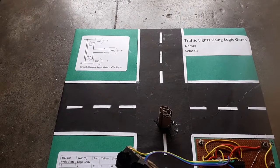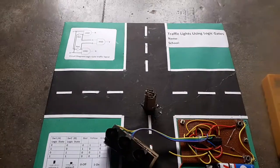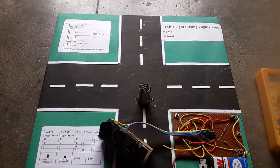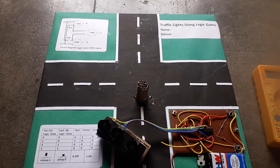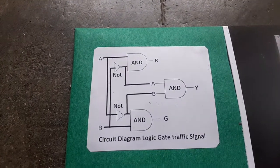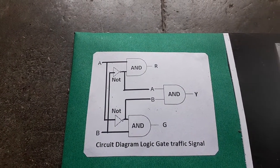The project name is traffic lights using logic gates. In this project we have constructed a traffic light using logic gates like AND gate and NOT gate. We have used three AND gates and two NOT gates to derive the required logic.